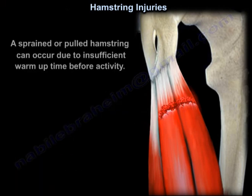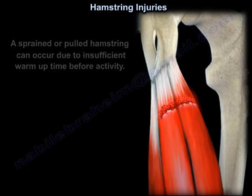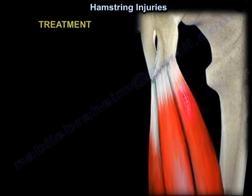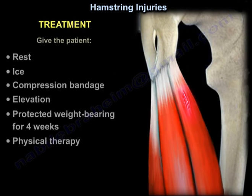A sprained or pulled hamstring can occur due to insufficient warm-up time before activity. Treatment includes rest, ice, compression bandage, elevation, protected weight bearing for four weeks, and physiotherapy.